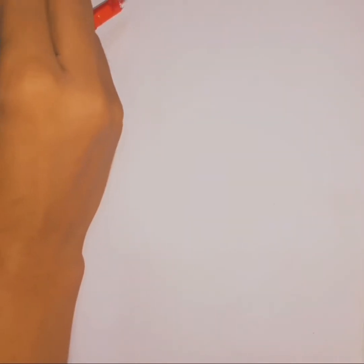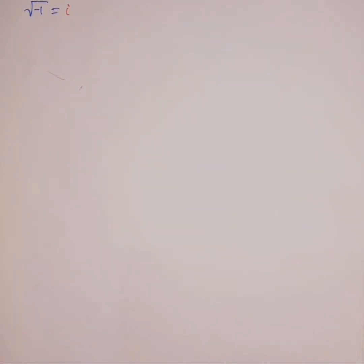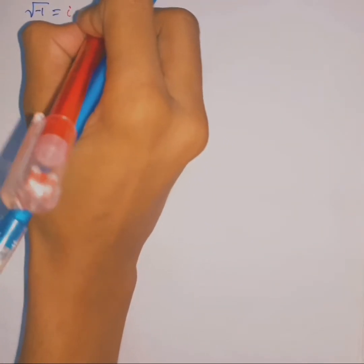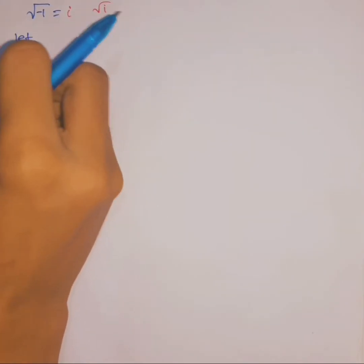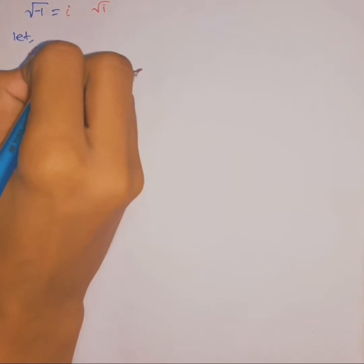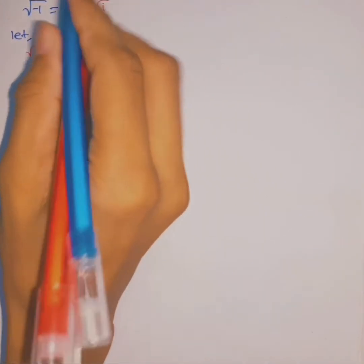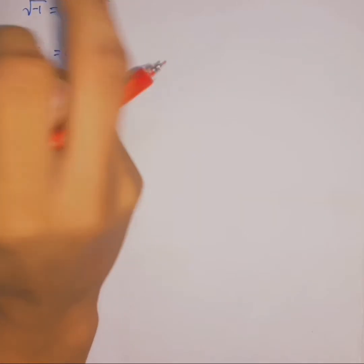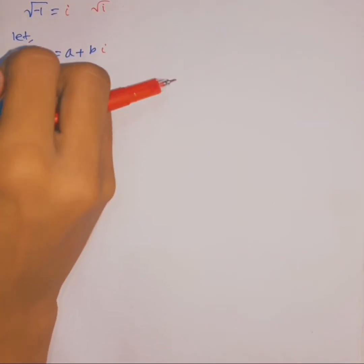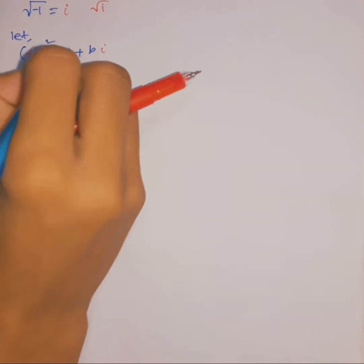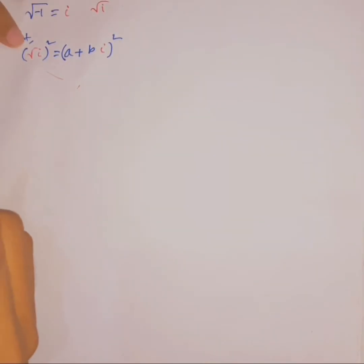Everybody knows that the square root of minus 1 is equal to i, but did you ever think what is the square root of i? This video is on that topic. First, let the square root of i equal to a plus bi, and if we can find the value of a and b then we're done. We're going to approach this in an algebraic way.